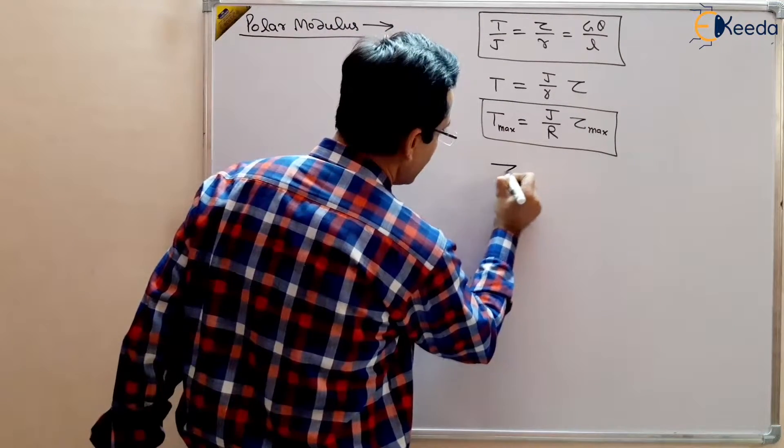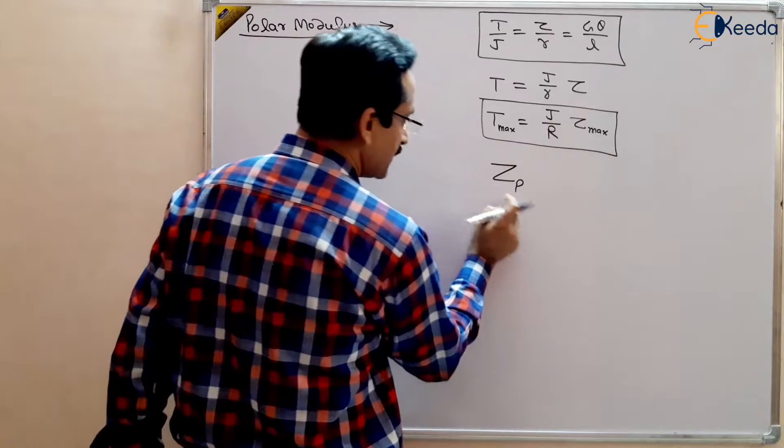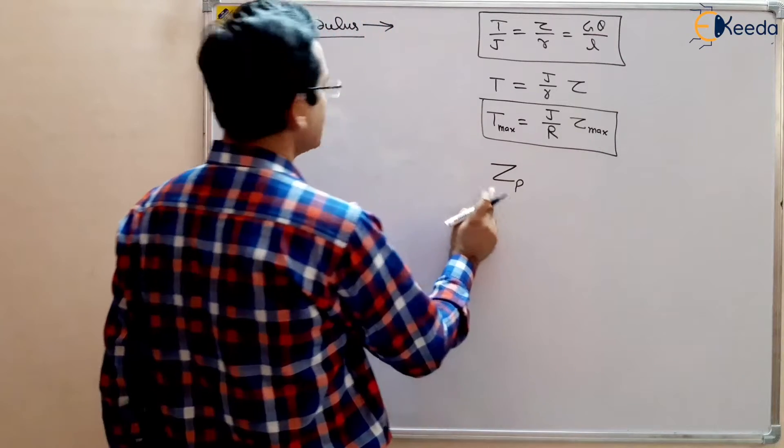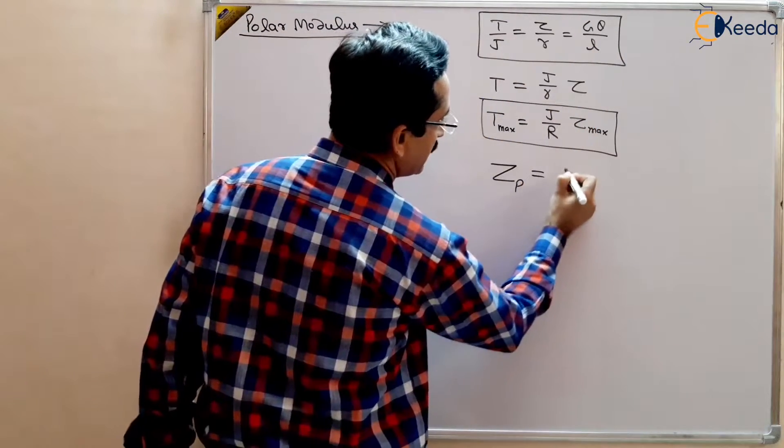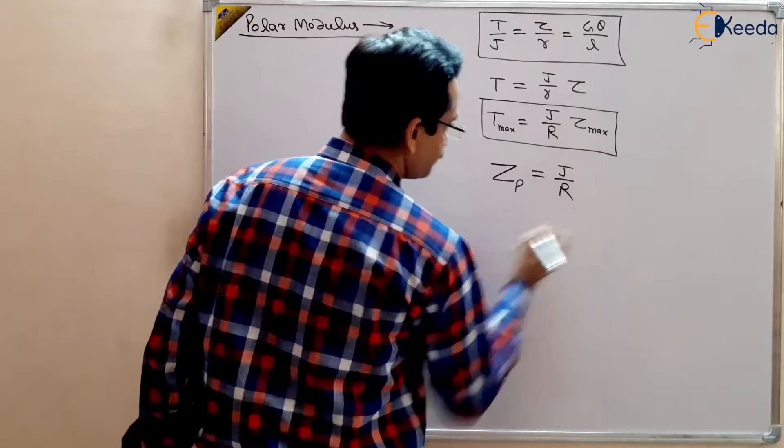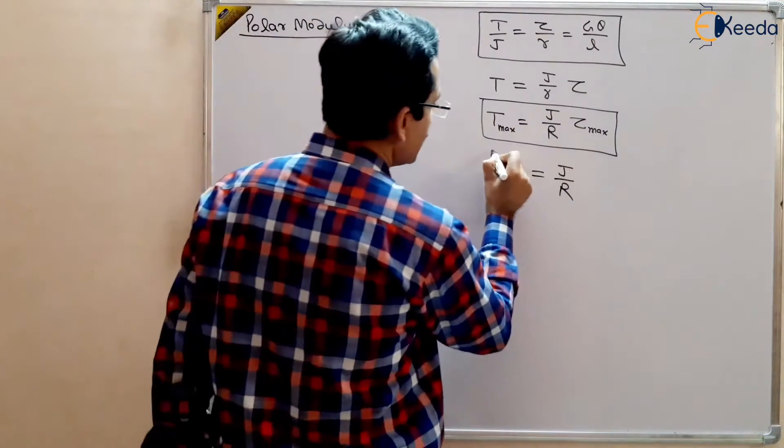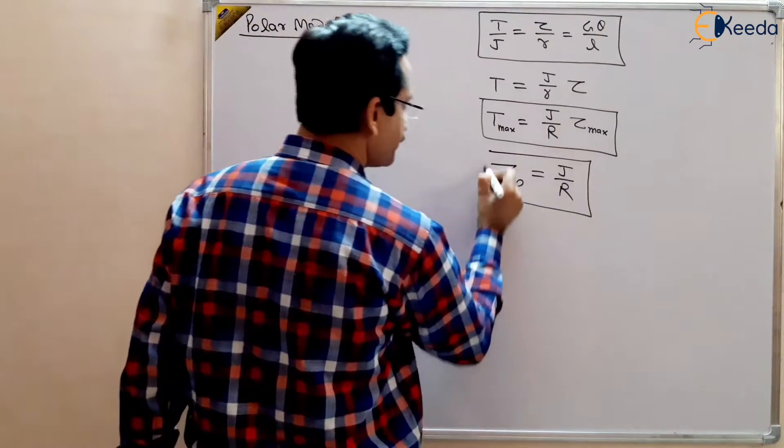So it is denoted by Z, ZP. ZP shows the Polar Modulus and simple Z shows the section modulus, we will study in bending stresses, and that is equal to J by R. So this is J by R.